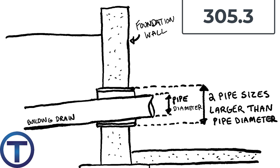305.3 tells us that when pipes pass through a foundation wall, they need an extra sleeve around them with some space, and that sleeve should be two pipe sizes larger than the pipe itself. That gets tricky — for a three-inch pipe, you'd go to four inch, then five inch, but five-inch pipe is hard to get and very expensive, so you'd go to six inch, which leaves an enormous gap that can let groundwater in. We do have to seal these pipes through a foundation so groundwater won't come into the building. For test purposes: the sleeve is two pipe sizes larger than the diameter of the pipe passing through.